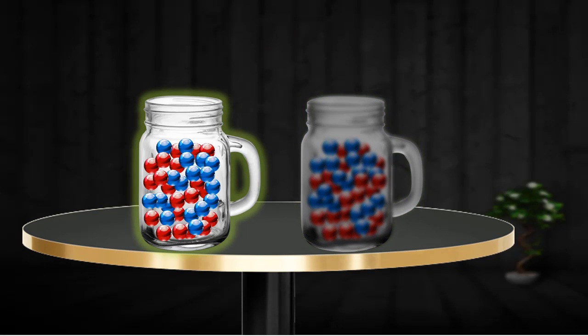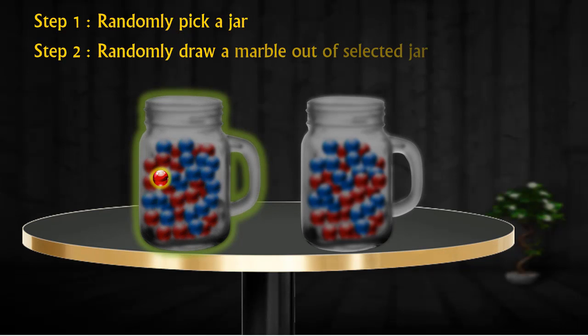While picking it blindly, you will first randomly pick a jar and then randomly pick a marble out of that jar. You can arrange the marbles however you like but you must place all of the marbles in these two jars.